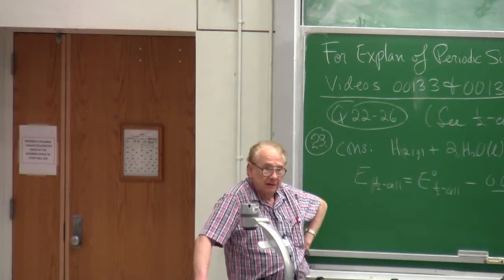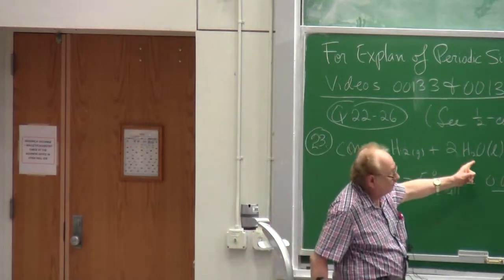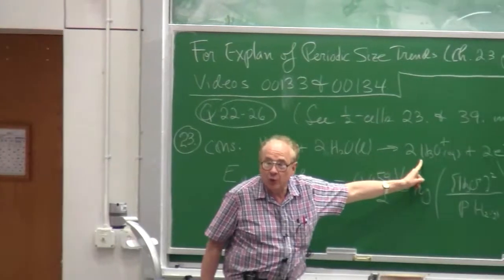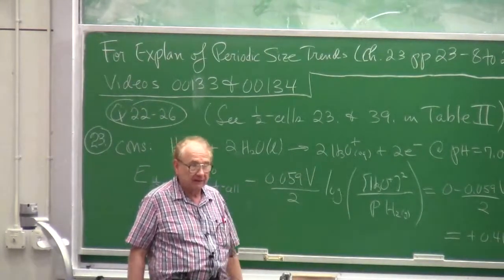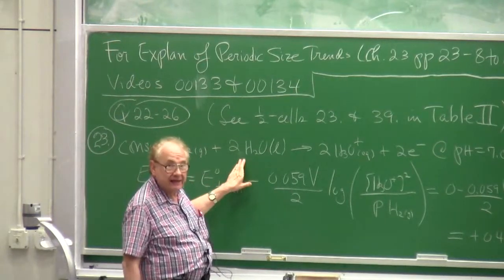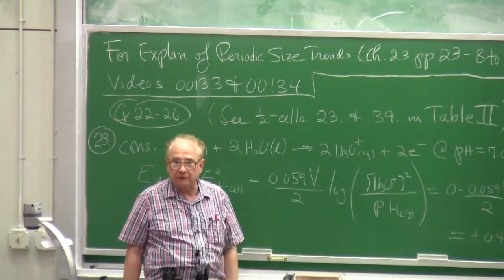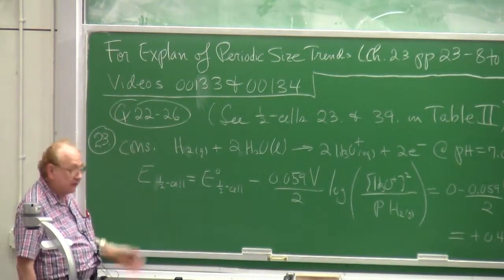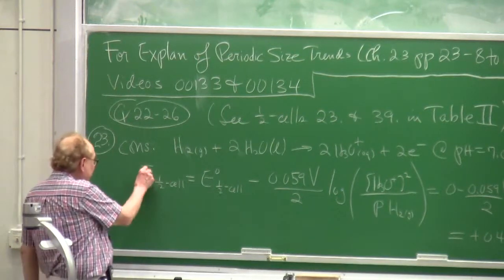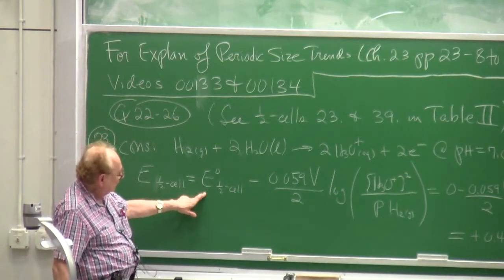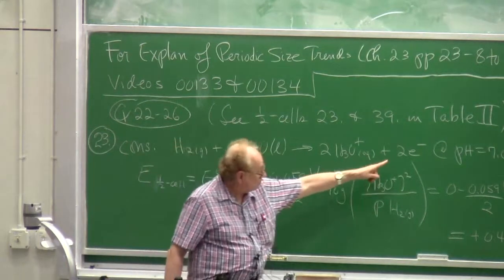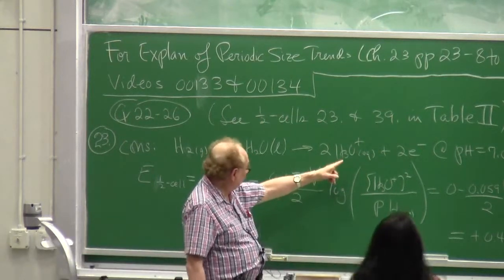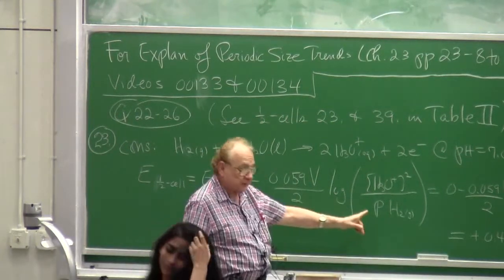Here's the half cell reaction. At pH 7.0, this is not a standard half cell because the hydronium ion molarity is standard only at one molar (pH 0), not pH 7. You see a tabulated E value, not E0 value, of +0.41 volts. Where does 0.41 volts come from? Just apply Nernst to this half cell: E0 half cell minus 0.059V over 2, times Q - hydronium ion molarity as product, and partial pressure of hydrogen in the denominator.